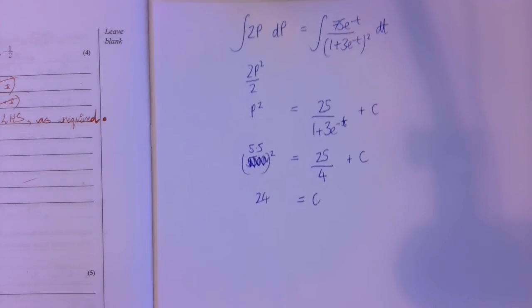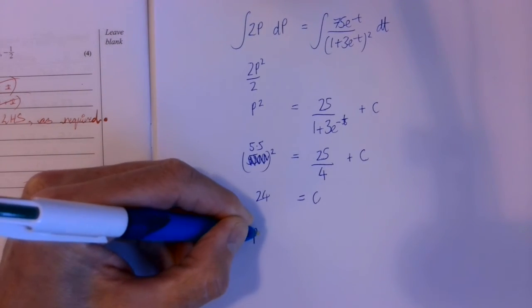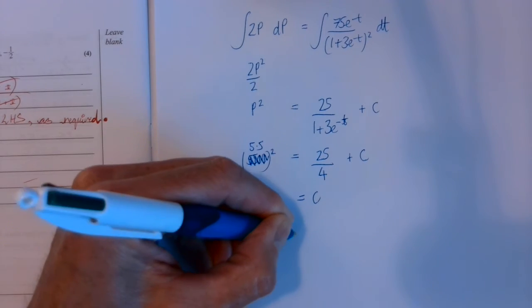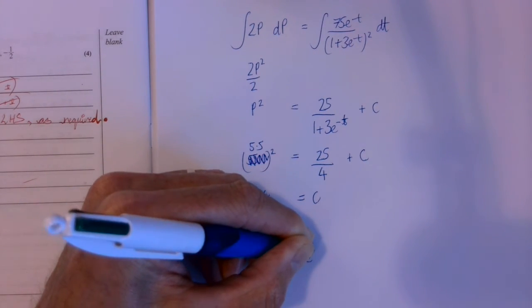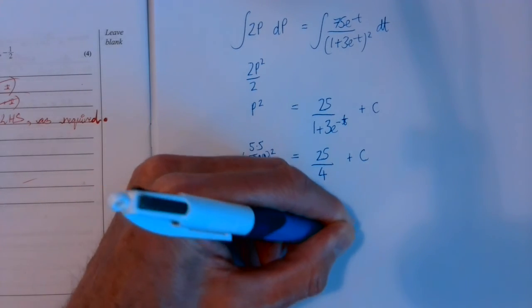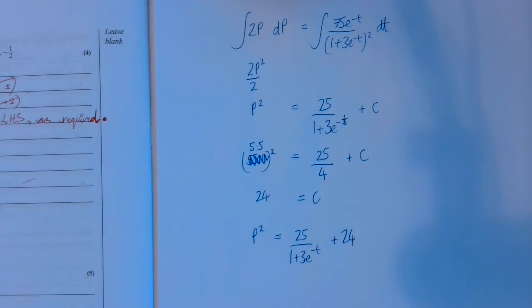So my final answer to part B is that p squared is equal to 25 over 1 plus 3e to the minus t plus 24. That's part B.